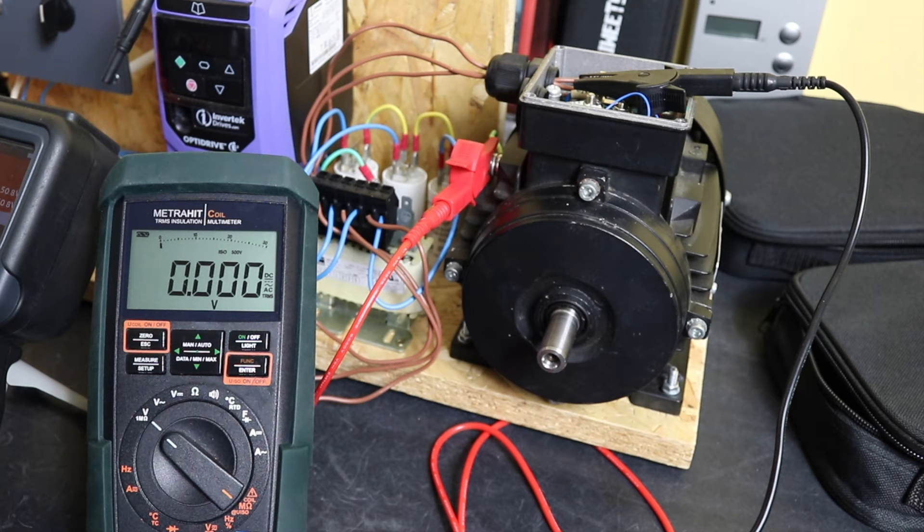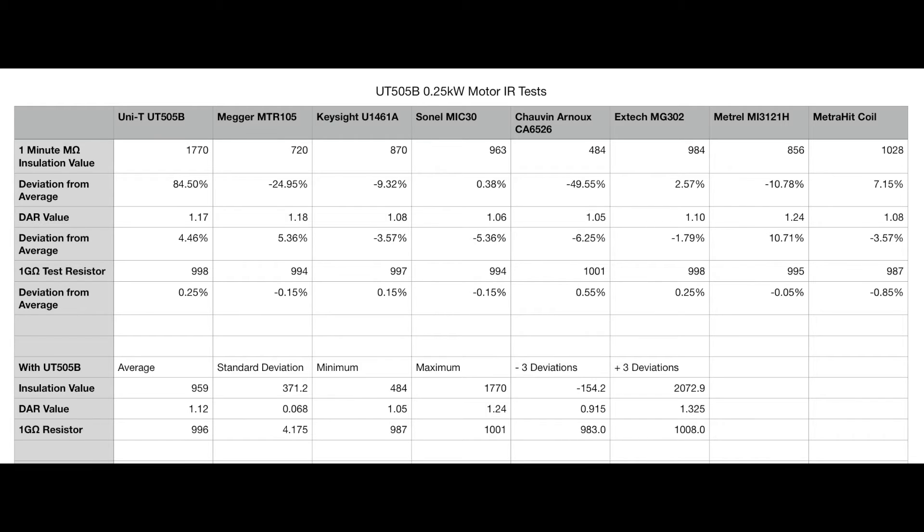Here's our results table. You can see at the top line the insulation value in megaohms at the one minute mark for each of the instruments. You can see the UT505B has got the highest reading.